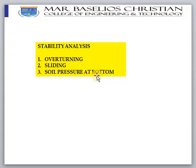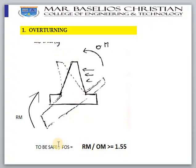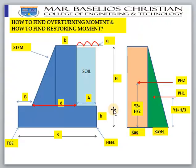For overturning, the soil pressure and surcharge create an overturning moment, while the self-weight and other vertical loads create a resisting or restoring moment. For the retaining wall to be safe against overturning, the factor of safety — resisting moment divided by overturning moment — must be greater than or equal to 1.55.